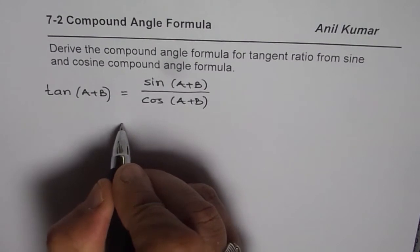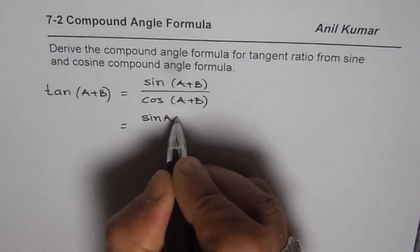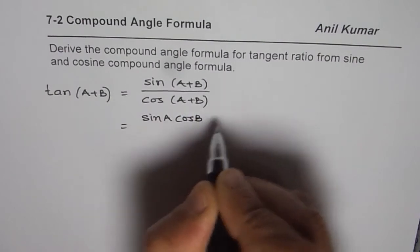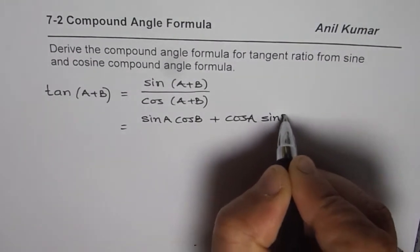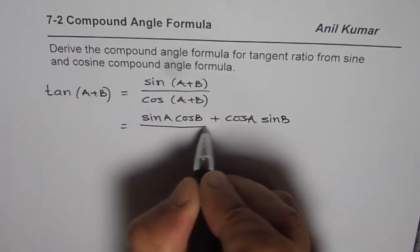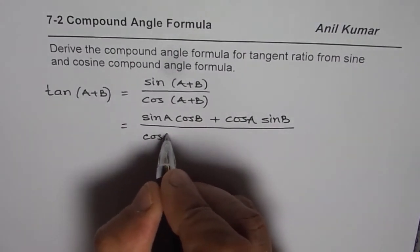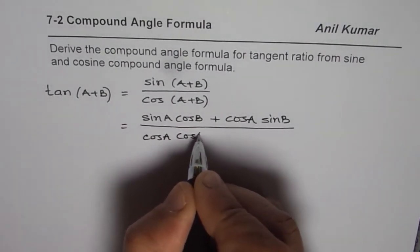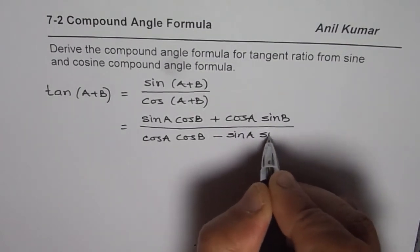Now, we know what is sine of A plus B, which is sine A cos B plus cos A sine B. And how about cos A plus B? Cos A plus B is cos A cos B minus sine A sine B.